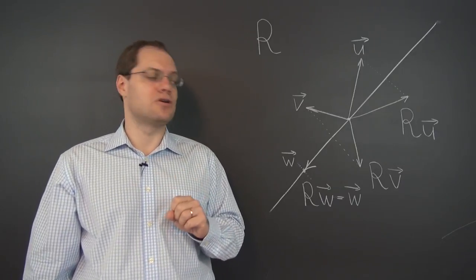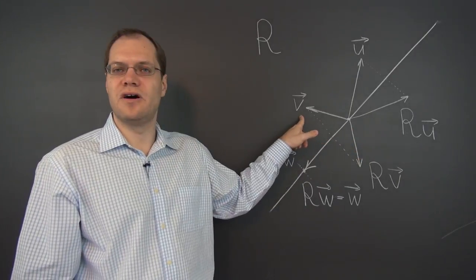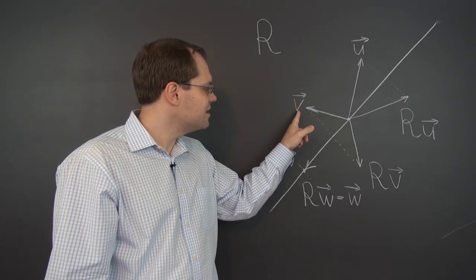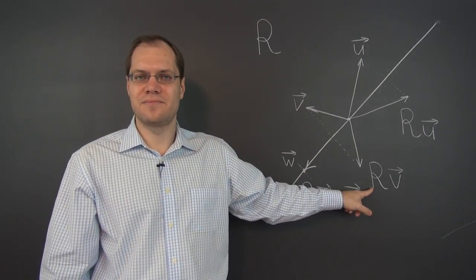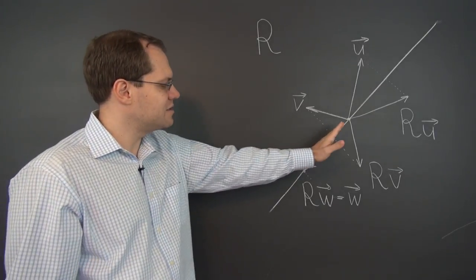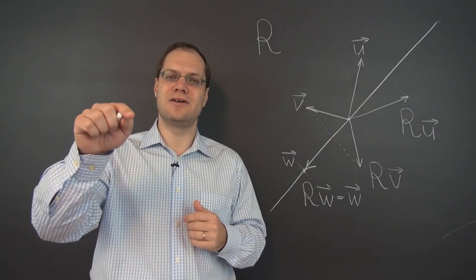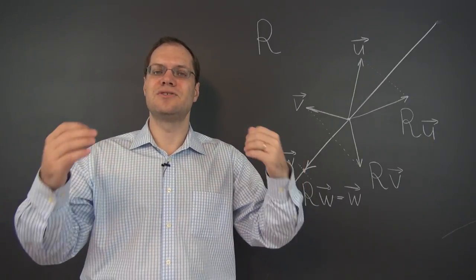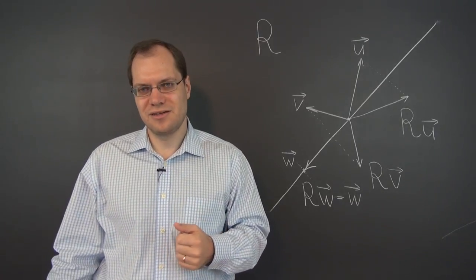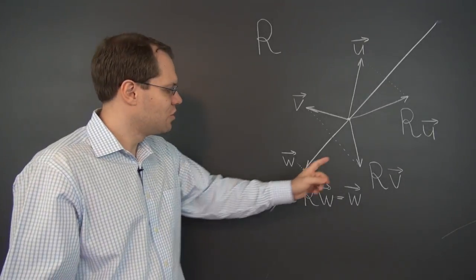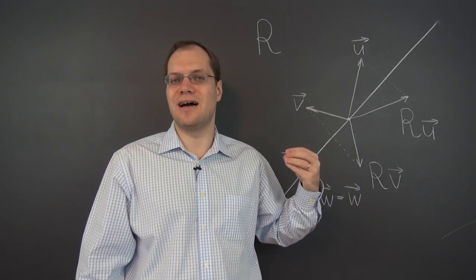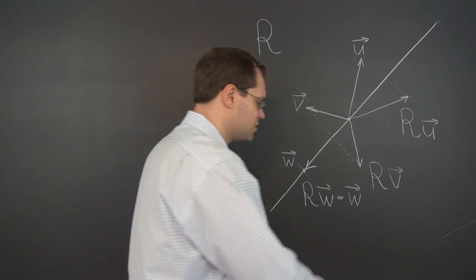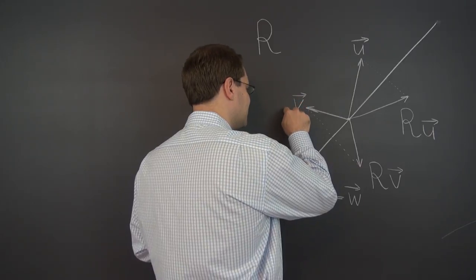A couple of new terms: the result of a linear transformation is called the image — it is the image of the original vector. The original is called the pre-image. This terminology comes from real life: looking in a mirror and seeing your reflection is your image. The term image, applying to all transformations across mathematics, comes from geometry and our physical experience with mirrors — more specifically from this transformation, reflection.